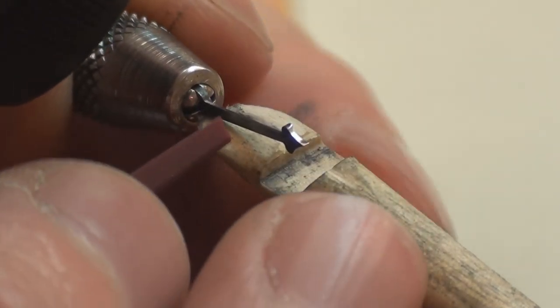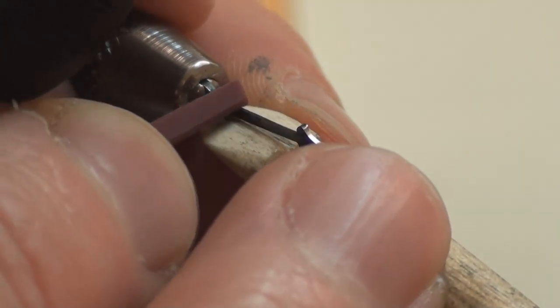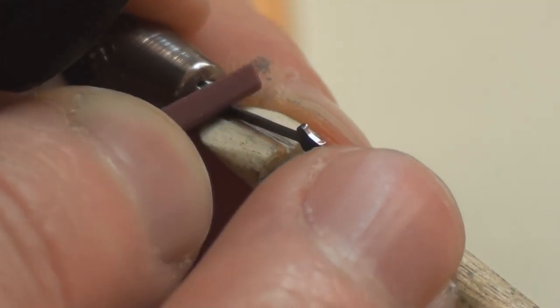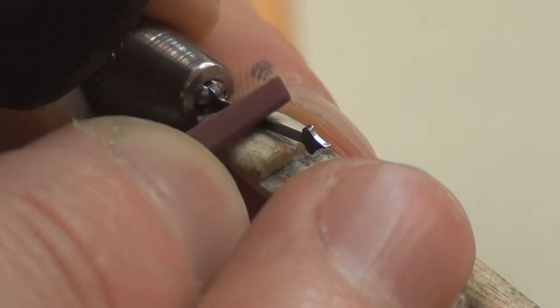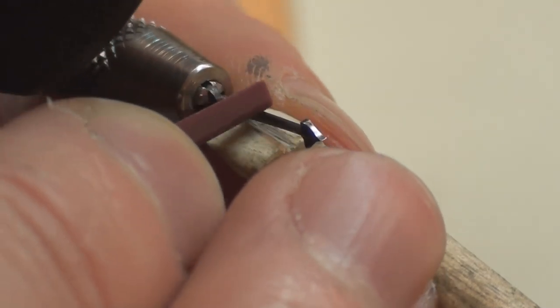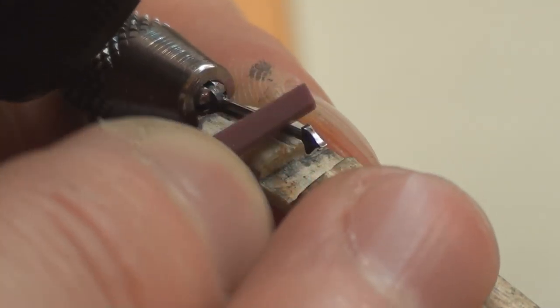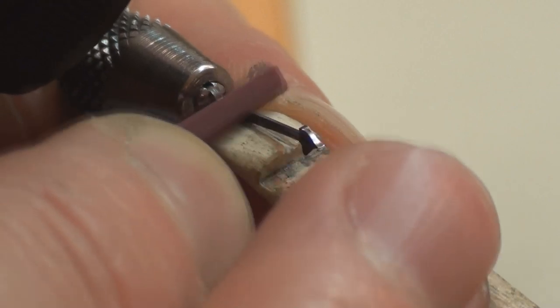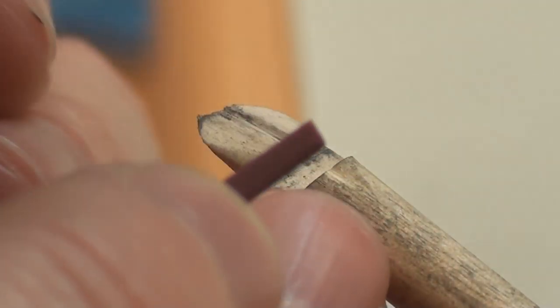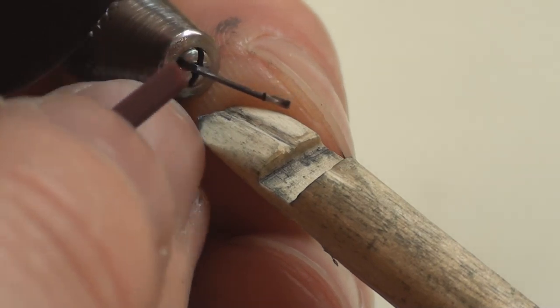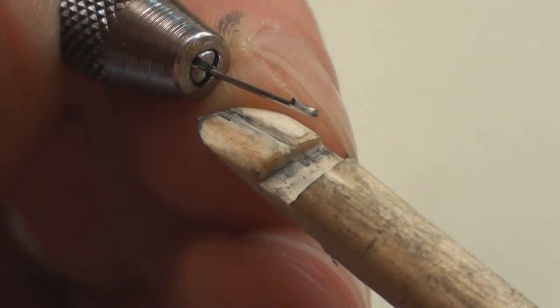So I'm happy with that now, and we can just clean up the side of the hand here. Just the initial cleaning, removing the oxidisation from the heat treatment of the hand. And that's starting to look a bit more presentable.